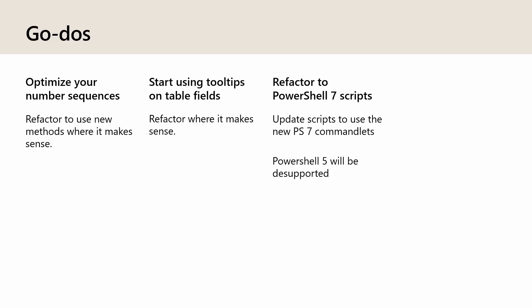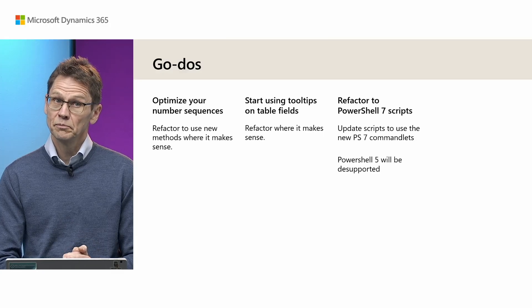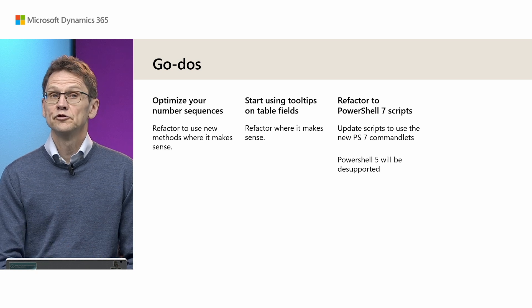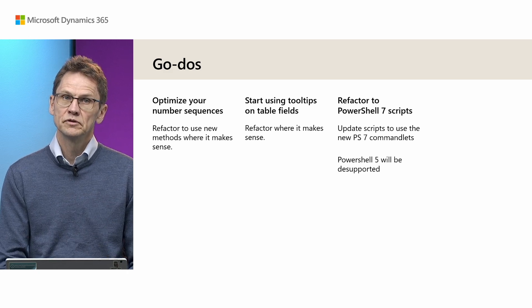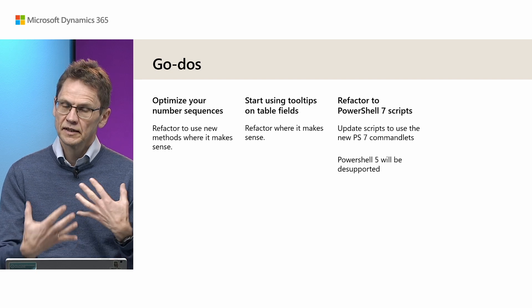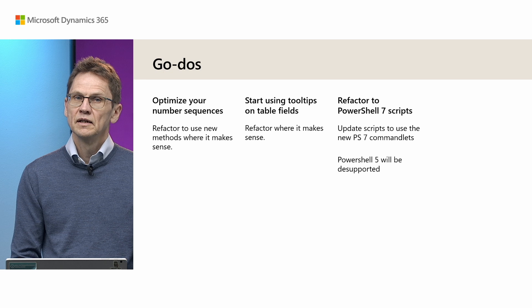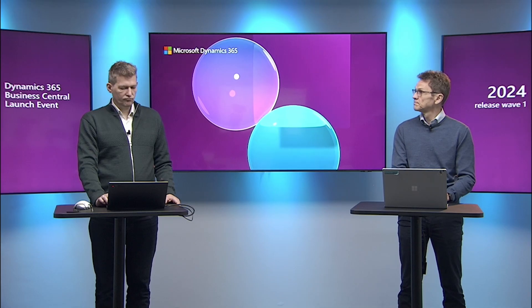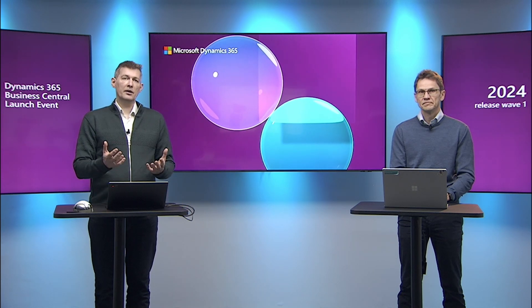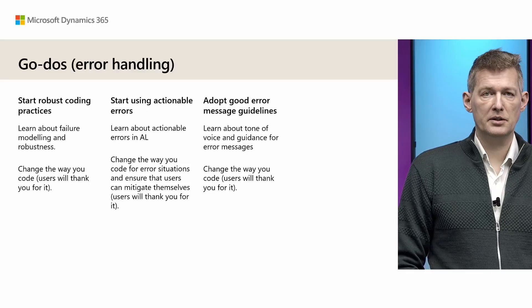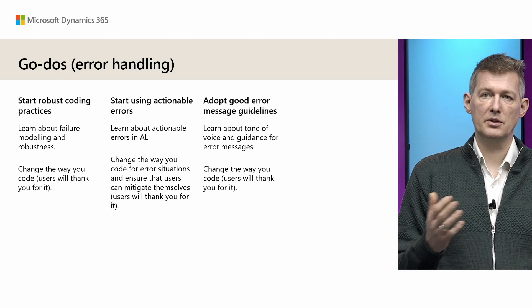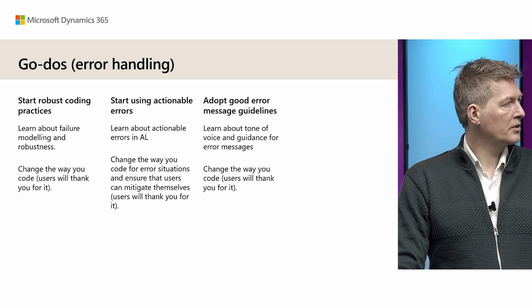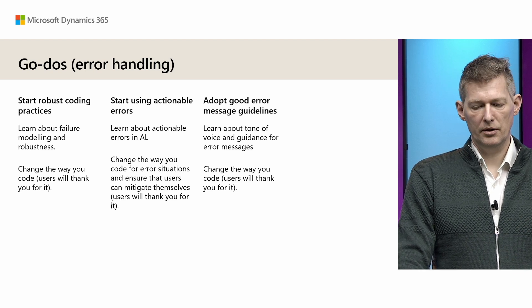That leaves us with the to-dos for this session. Some things to take away: go ahead and optimize your number sequences, refactoring to use the new methods when you have restart scenarios or need to draw ranges of numbers. Start using tooltips on table fields and get the benefit as we expand on that capability. Refactor to PowerShell 7 scripts. And for error handling, start thinking about using robust coding practices and failure modeling, use actionable errors where it makes sense, and adopt the new error message guidelines so that users have a better experience.